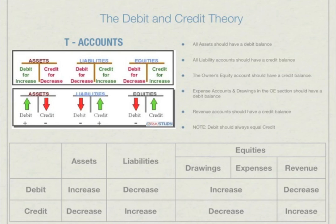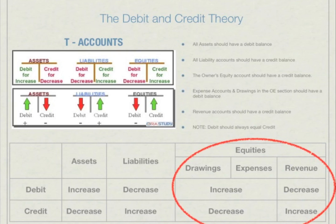However, in the equities section there are many different accounts, such as drawings, revenue, and expenses, which make up the owner's equity section. The drawings account is for withdrawals the owner makes for personal use outside of the business. When the owner withdraws an amount, it is debited in the drawings account and credited in the bank account from the asset section, because there is a decrease in money. A debit in the drawings account is effectively a way of decreasing the owner's equity account.